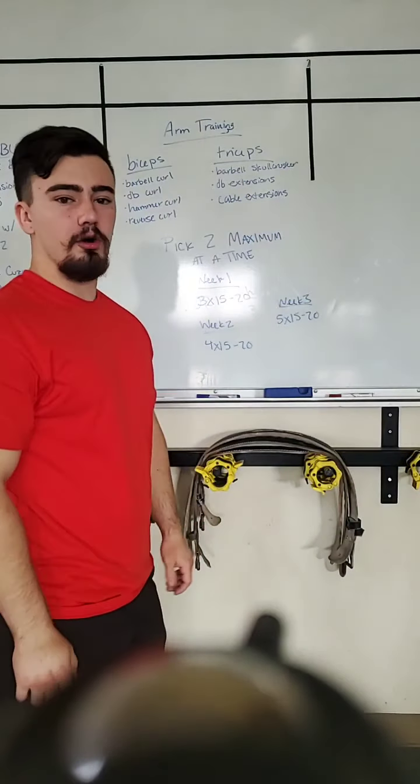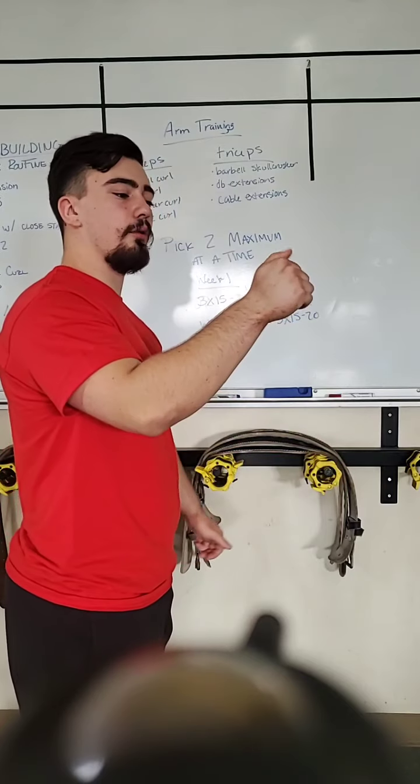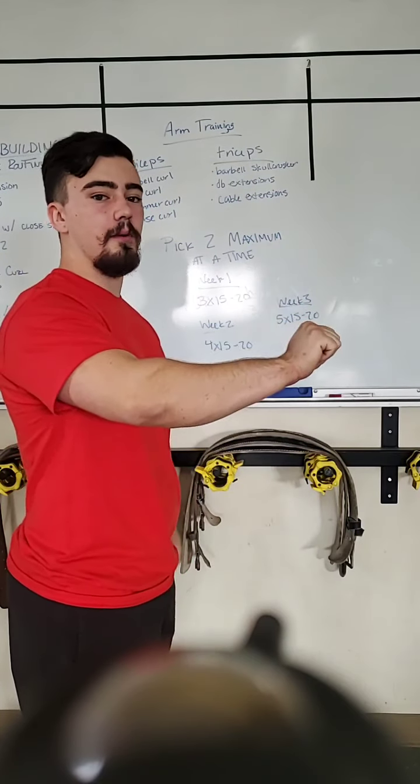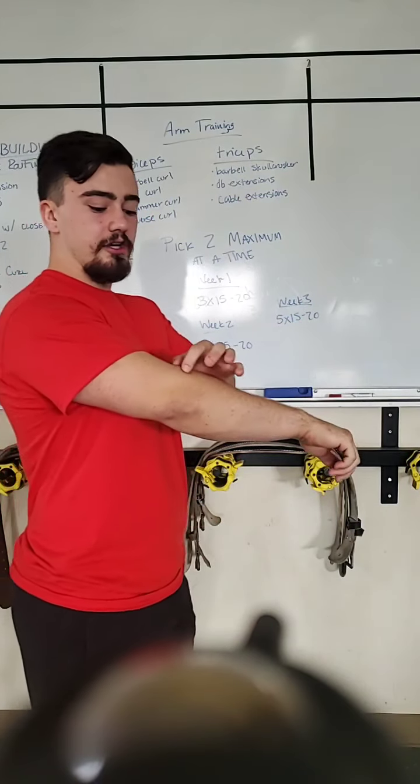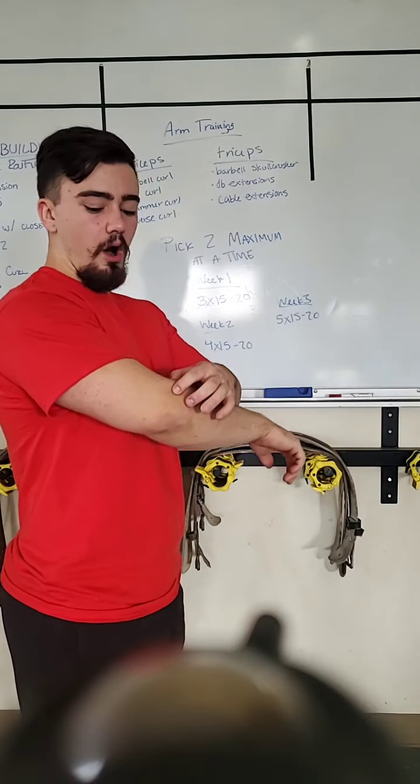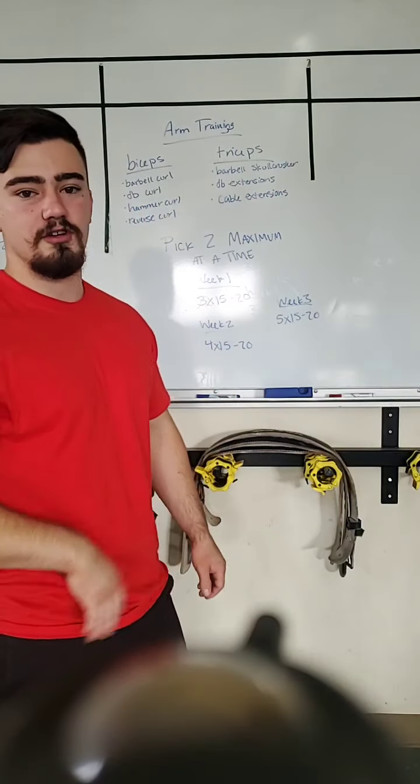Reverse curl. That is a barbell curl with an overhand grip with no thumb. So your thumb goes over the top of the bar. This is also very good for your forearm and for your brachialis. That's the barbell version of the hammer curl.